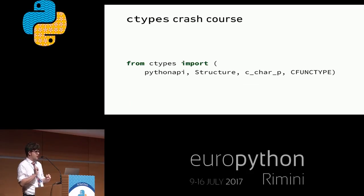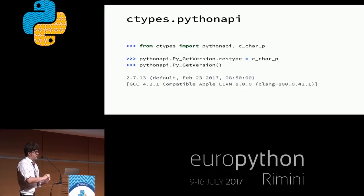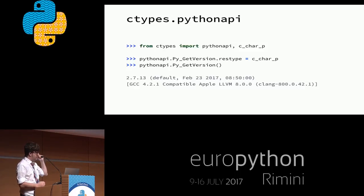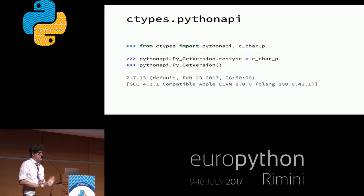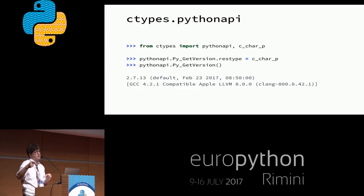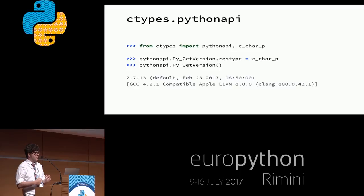A quick crash course in ctypes. ctypes allows you to load any shared library, but it comes with a convenience attribute for accessing the libPython C library via ctypes.pythonapi. Any C functions exposed in the library can be accessed as attributes of ctypes.pythonapi. There are a few quirks with how it handles types — you set the attributes arg_types and res_type on the functions so the ctypes module knows how to pass arguments, for example converting a Python int into an actual C int. It also comes with built-in types like c_char_p, which is a pointer to a char, and c_void_p, which is a pointer to any address.